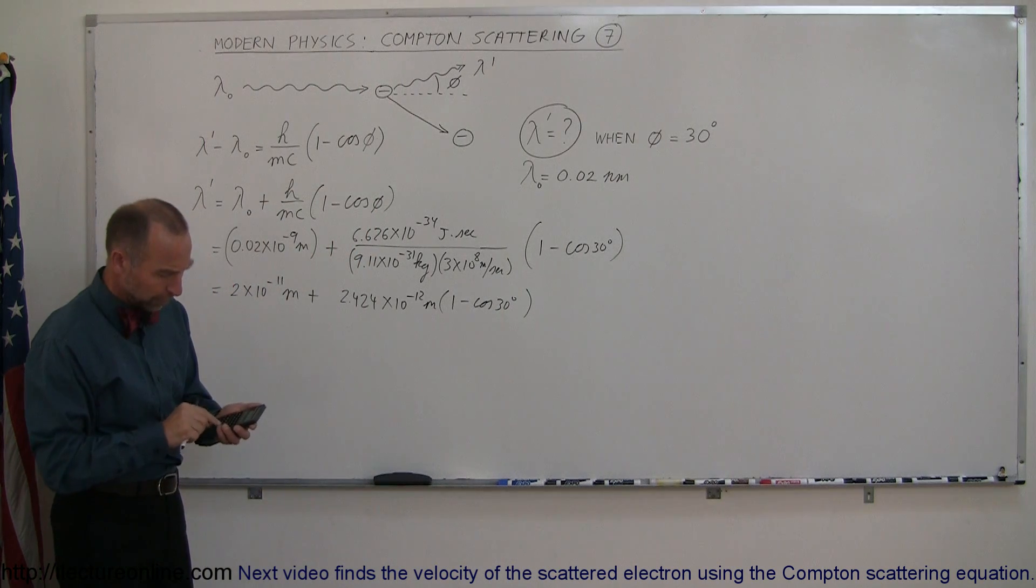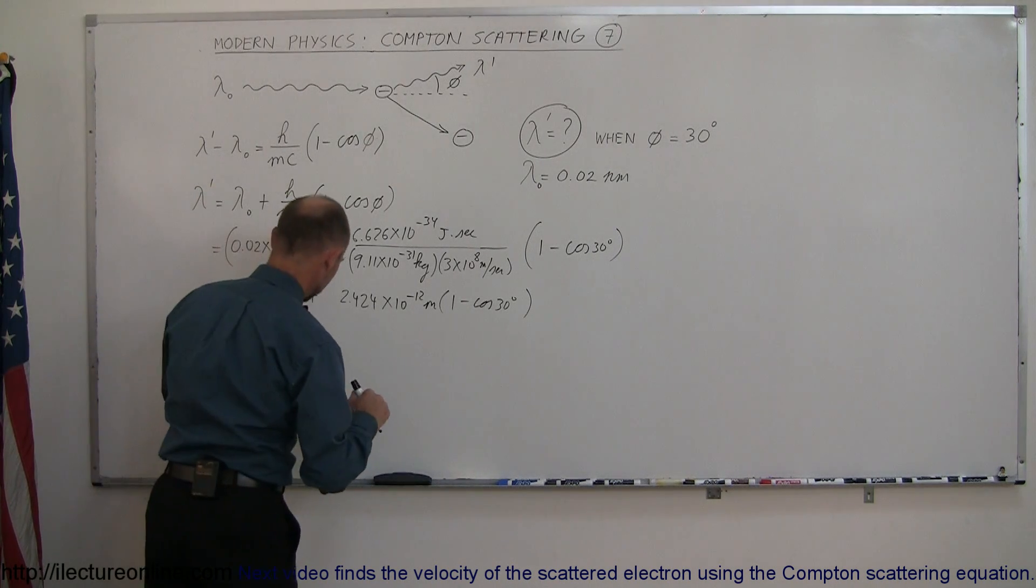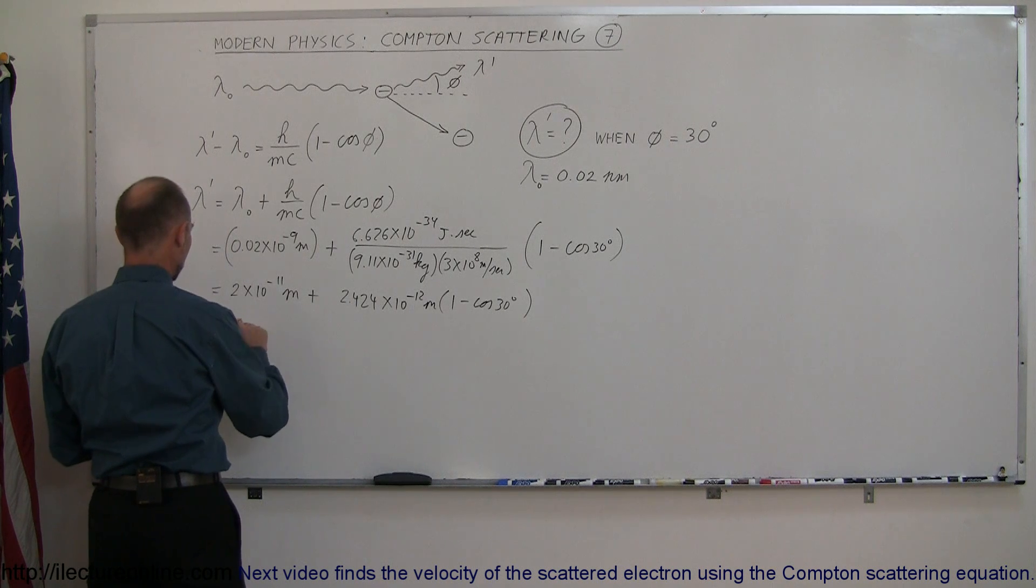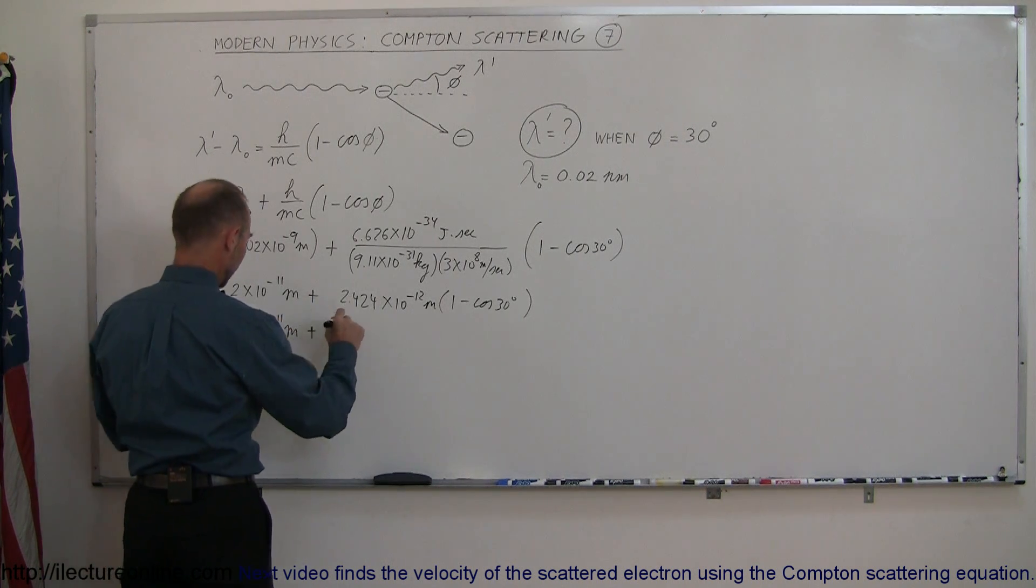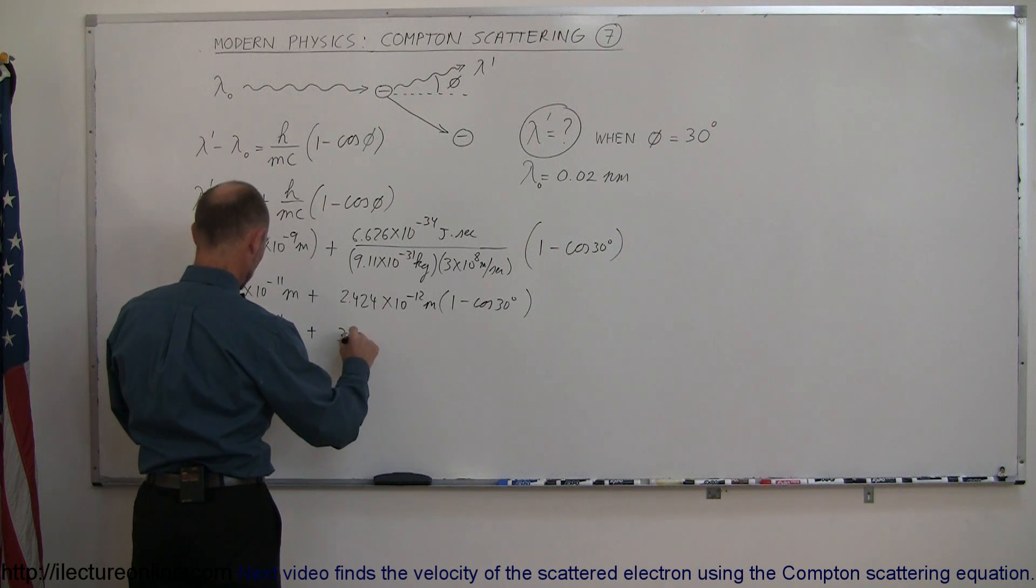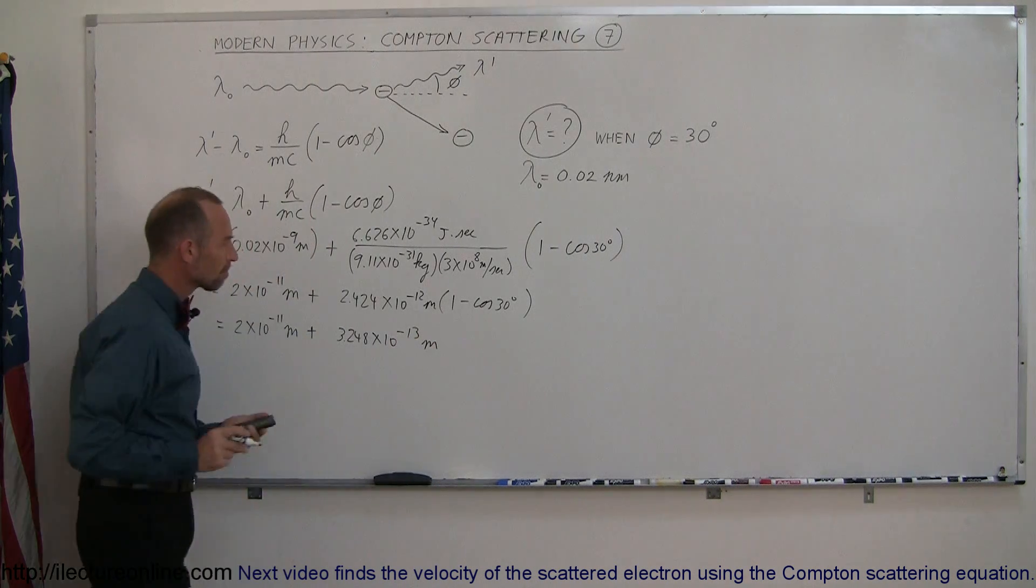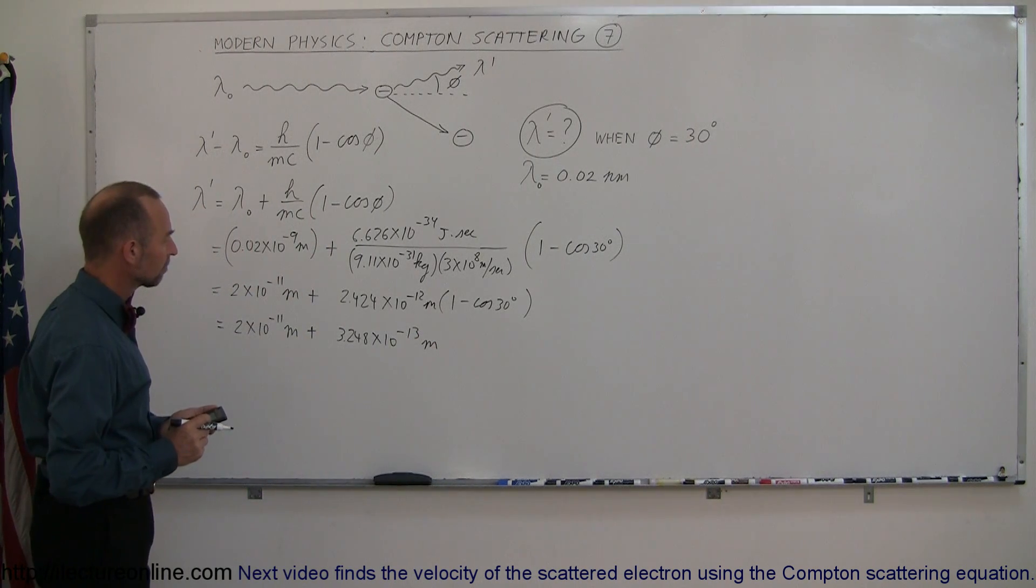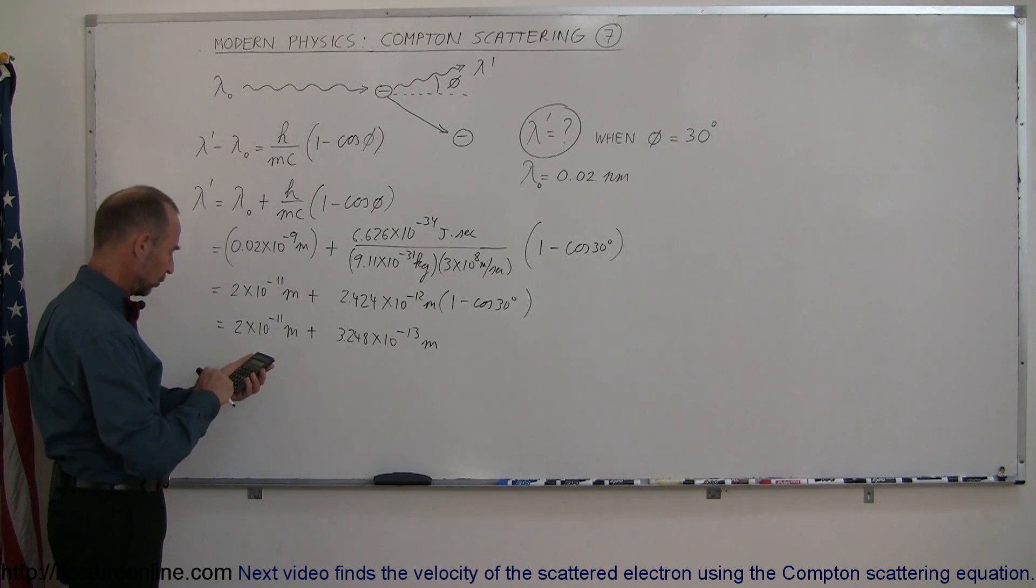So multiply by 1 minus cosine of 30. This becomes 2 times 10 to the minus 11 meters, plus 3.248 times 10 to the minus 13 meters. Now add those two together.